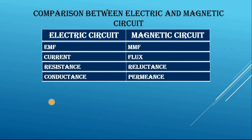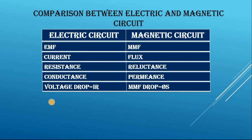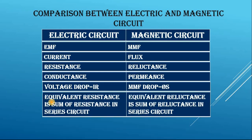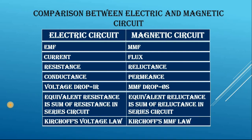The reciprocal of resistance is conductance, and the reciprocal of reluctance is permeance. Voltage drop is IR in an electric circuit, and MMF drop is φS in a magnetic circuit, where φ is the flux and S is the reluctance. Equivalent resistance is the sum of resistances in a series electric circuit; equivalent reluctance is the sum of reluctances in a series magnetic circuit. In an electric circuit we have Kirchhoff's voltage law — the sum of voltage rise is equal to the sum of voltage drop in a closed circuit.